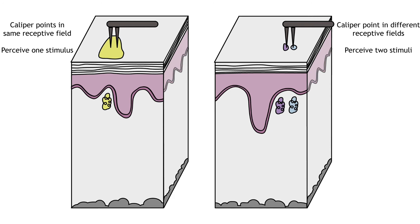Tools like calipers or even a paper clip can be used to measure two-point discrimination. If the two points of the caliper feel like one point, they are both activating the same receptive field, indicating the receptive field is large. If, however, it is possible to perceive two separate points on the skin, then the calipers are activating two different receptive fields.